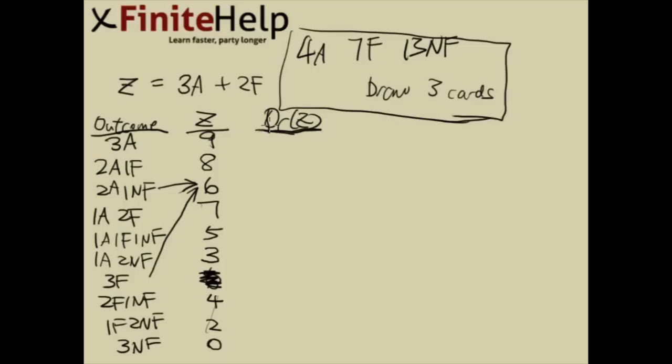So of course, the probability that Z equals 9 is the same thing as the probability that our outcome is 3 aces. That's what is going to make Z 9. So we want to know the probability of 3 aces. So what kind of probability problem is this? We're drawing 3 cards, that's simultaneously, so that's without replacement. And we don't really care about the order which we brought them in. We just care about what kind of cards they are. So this is a combination problem.